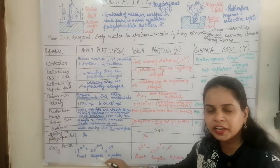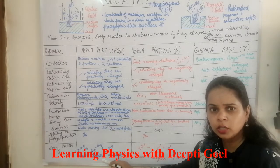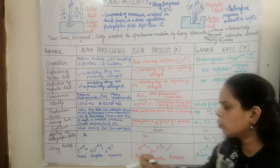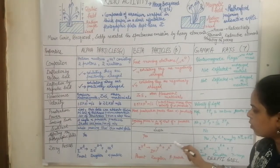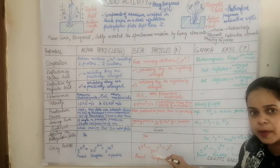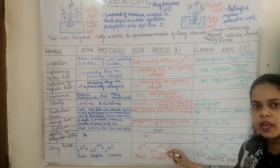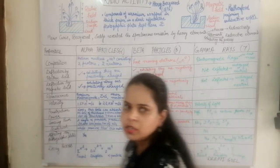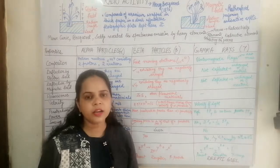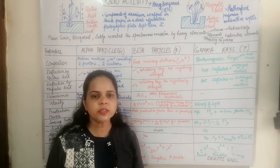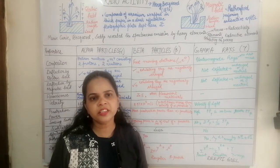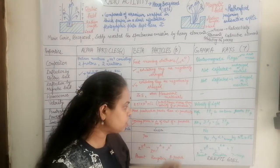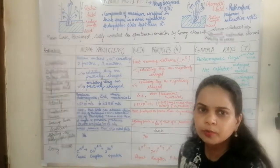In beta decay, the daughter nucleus has its atomic number increased by 1 while the mass number remains the same, making them isobars. In gamma ray emission, the parent and daughter nucleus differ only in energy states — when the nucleus transitions from a higher to lower energy state, a gamma ray is emitted.